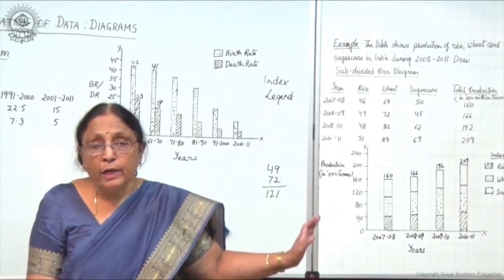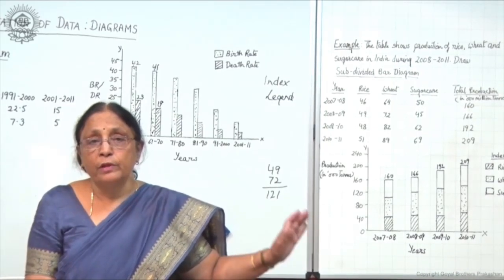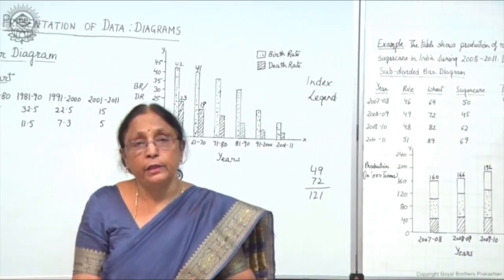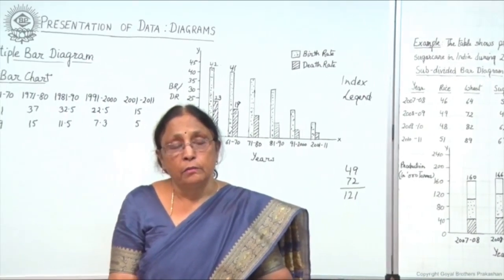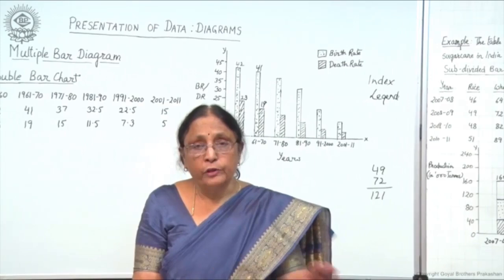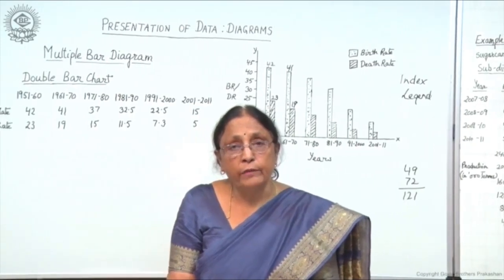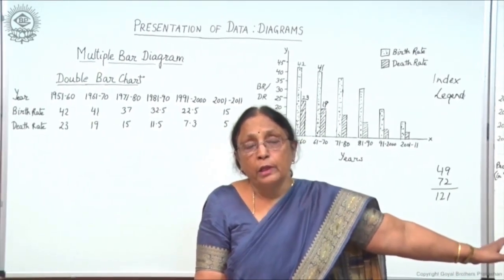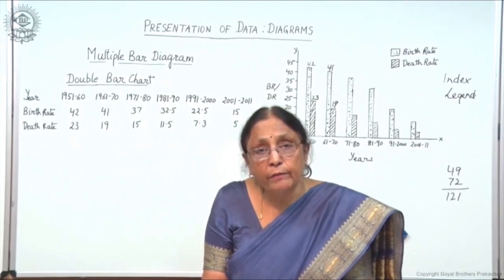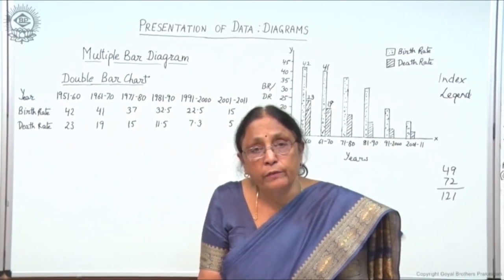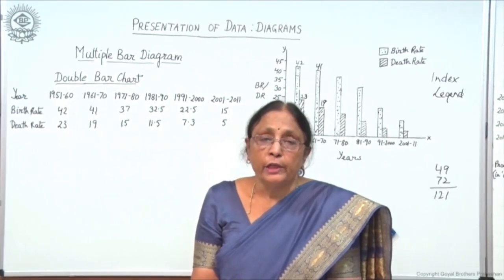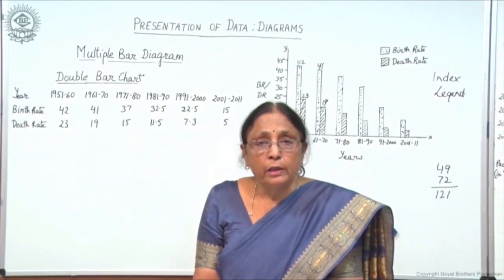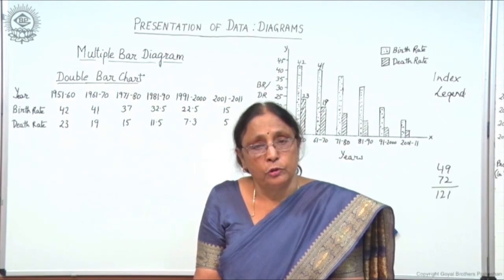This subdivided bar diagram is suitable when the total of all variables is given. When only the three variables are given and the total is not given, then you can use a triple bar diagram instead.